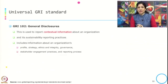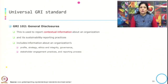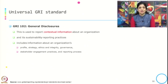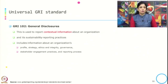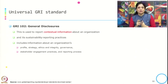GRI 102 covers General Disclosures and is used to report contextual information about an organization and its sustainability practices. It includes information about the organization's profile, strategy, ethics, integrity, governance, stakeholder engagement practices and reporting processes. While GRI 101 covers the fundamentals, GRI 102 provides the general disclosure about the organization's profile, strategy, ethics, integrity, governance and other practices.